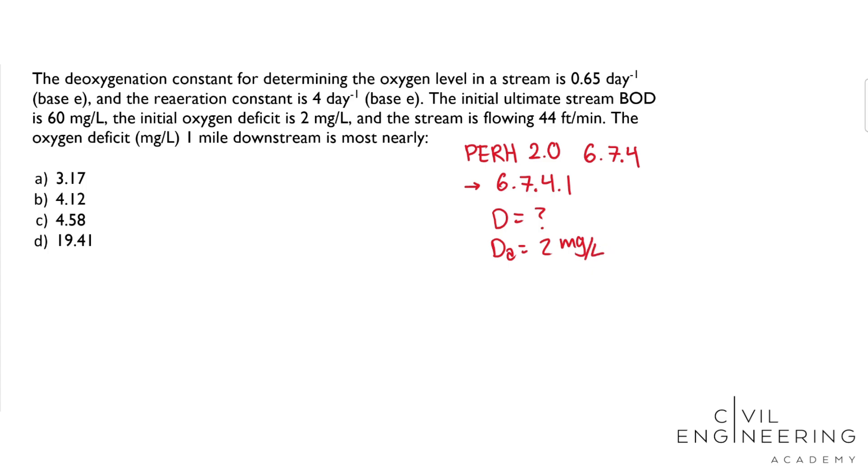If we keep going, DO sat is saturated dissolved oxygen concentration. We don't have that, that wasn't stated in the problem. KD is the deoxygenation rate constant, base e. And we do have that. That's the first thing they give us. So KD equals 0.65 days to the negative 1.